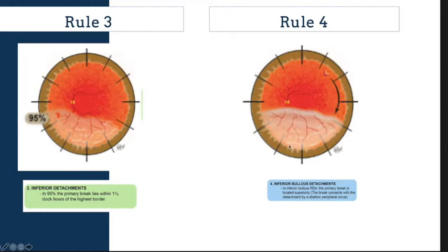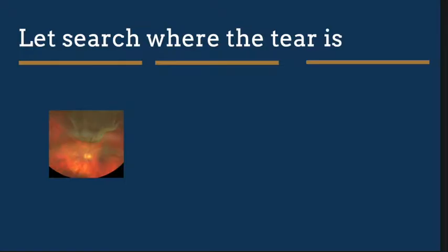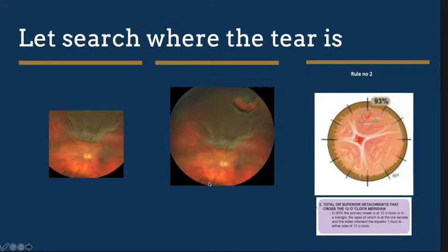Specifically for a bullous inferior retinal detachment, you usually don't find the tear inferiorly — look for the tear in the superior quadrant and it must be connected to the area of the bullous detachment inferiorly. For example, when doing fundoscopy and you see a superior bullous detachment, very corrugated with the macula possibly involved and crossing the midline, the tear location is most likely at the 12 o'clock position or within one and a half clock hours.